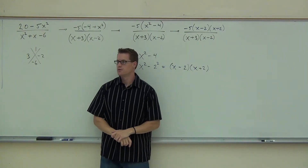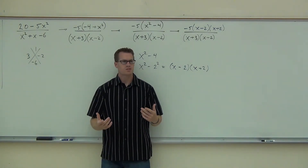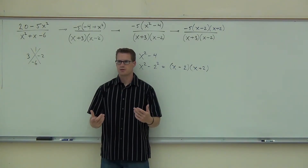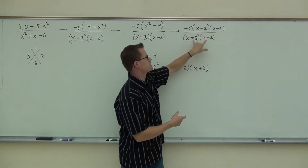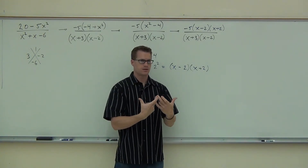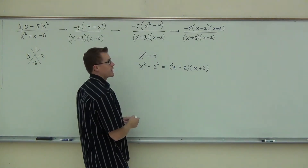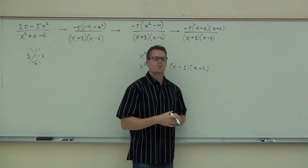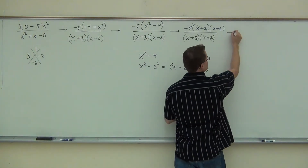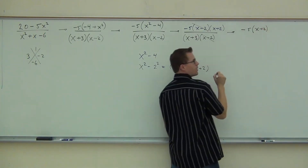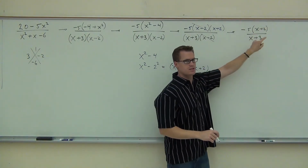Is there anything else we can do? Do we cancel, or simplify common factors? Terms are added and subtracted; factors are multiplied and divided. We want to simplify factors — entire things or nothing at all. Since we have our x minus 2s, those are gone. Just rewrite whatever you have left over. You don't need to distribute — you spent so much time factoring, leave it factored. Negative 5 times x plus 2, all over x plus 3.